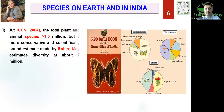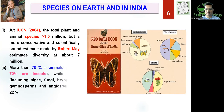Now let's talk about overall biodiversity. According to IUCN 2004 data — IUCN stands for International Union for Conservation of Nature and Natural Resources — more than 1.5 million animal species have been documented. However, Robert May estimates the total diversity to be about 7 million, and among those, 70% of animals are insects.